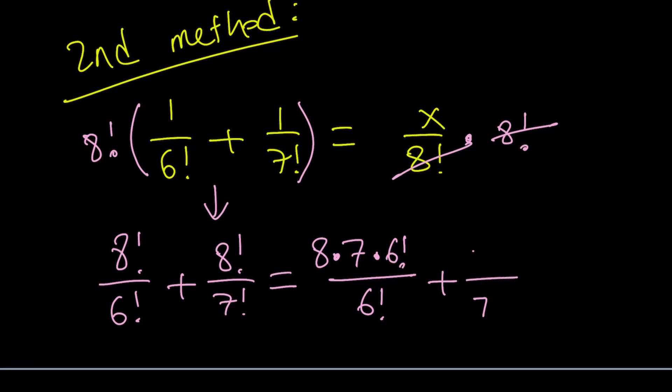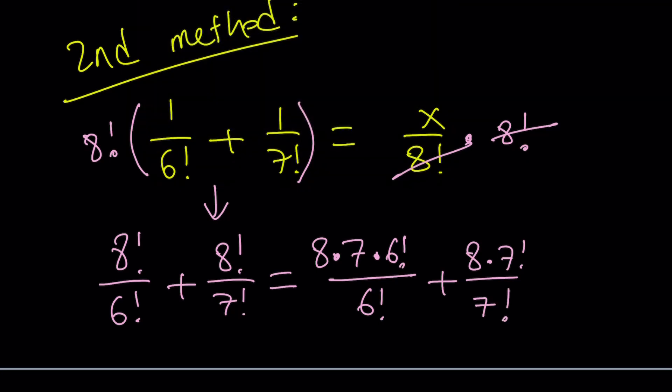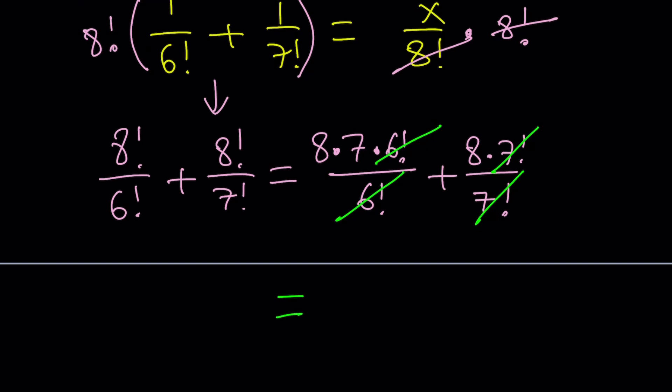And I forgot to expand the second one. So it's going to be 8 factorial. I keep writing 8 factorial. It's going to be 8 times 7 factorial and divide by 7 factorial. Cool. Now let's go ahead and simplify this. 6 factorial cancels out. 7 factorial cancels out. And yay, this is another method. Do you know why? Because in the first one, we found 8 times 8. This is 8 times 7 plus 8, which is 56 plus 8. Totally different method, right? And that is going to be 64. And that would be the answer.